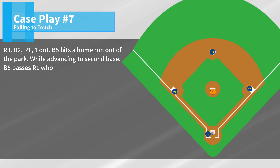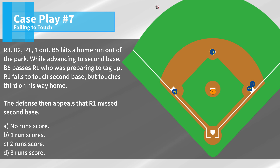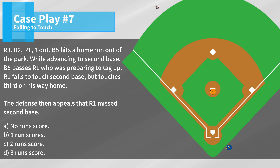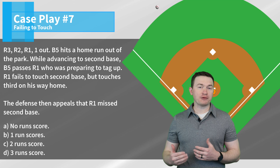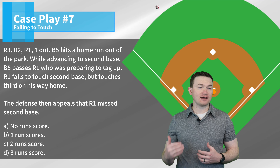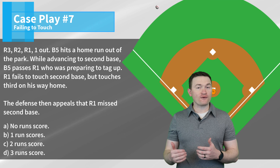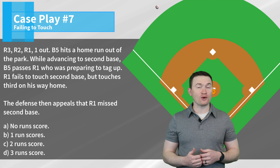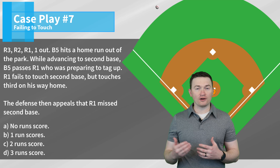Case play seven: bases loaded, one out. B5 hits a home run out of the park. While advancing to second base, B5 passes R1, who is preparing to tag up. R1 fails to touch second base but touches third on his way home. The defense appeals that R1 missed second base. The correct answer is that two runs are going to score. Because the batter runner passed R1, the batter runner is called out — passing is always a time play. The third out is on R1 at second, but because the batter runner was already called out, that force was removed, making the out at second a time play as well. So R3 and R2 score, while R1 and the batter runner are called out on time plays.